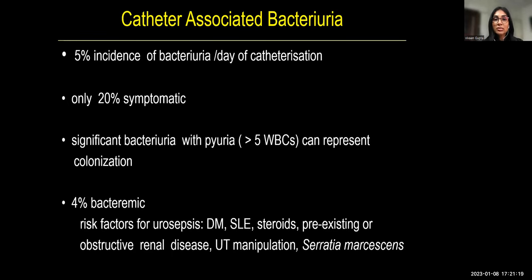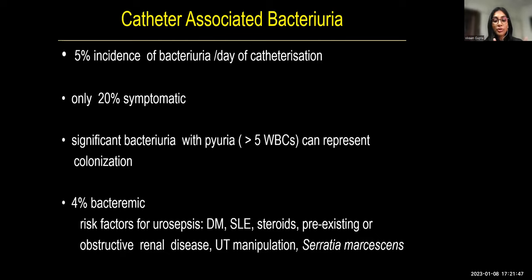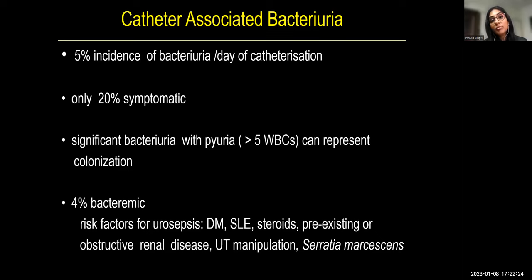There is a 5% incidence of bacteriuria per day of catheterization; only 20% become symptomatic and only 4% become bacteremic — usually in immunosuppressed, diabetic, steroid-dependent, or obstructive renal disease patients. A patient catheterized for 7 days has a 25% chance of a positive urine culture; at 30 days, 100% will have a positive culture. Urine routine from a catheter sample is unreliable — it will always show pus cells and RBCs, providing no information about true infection.